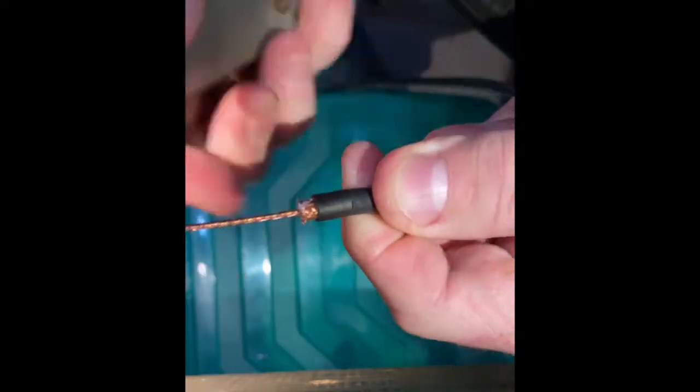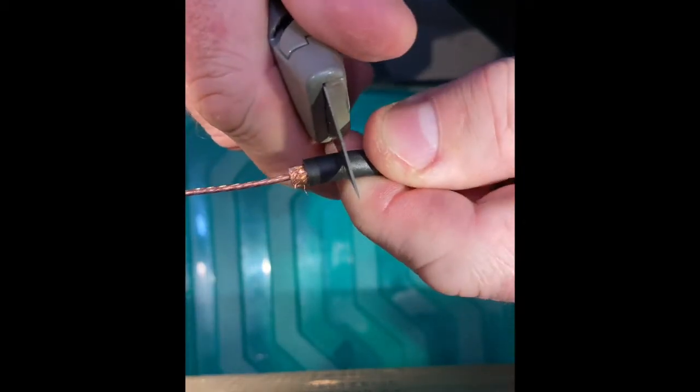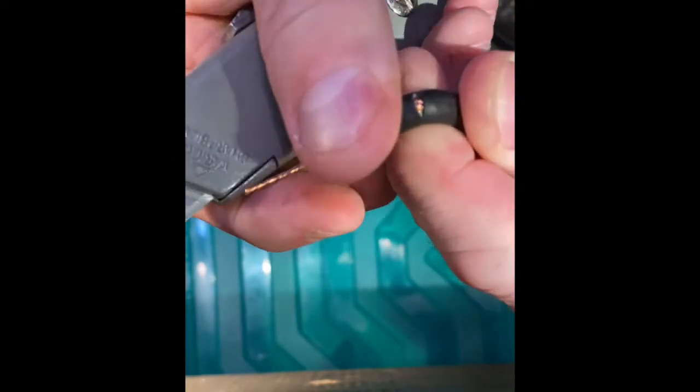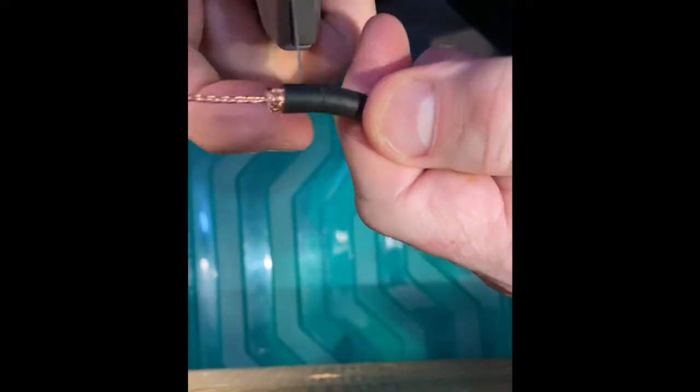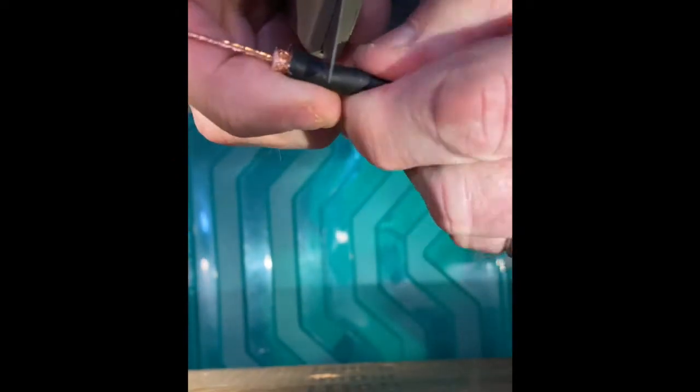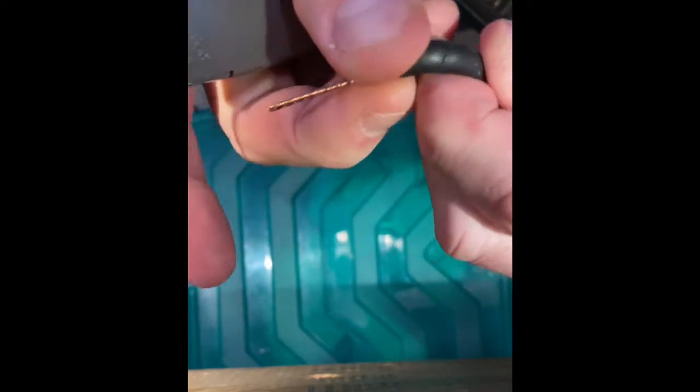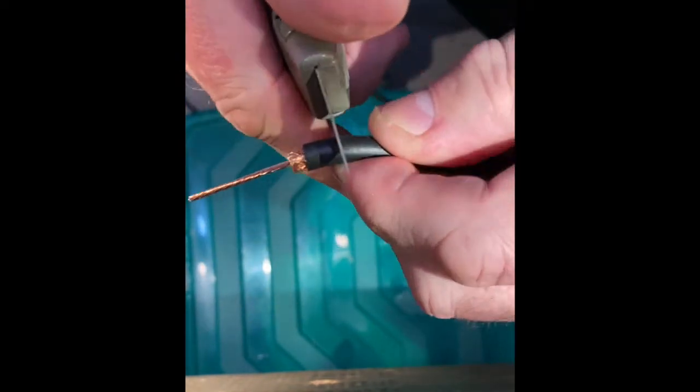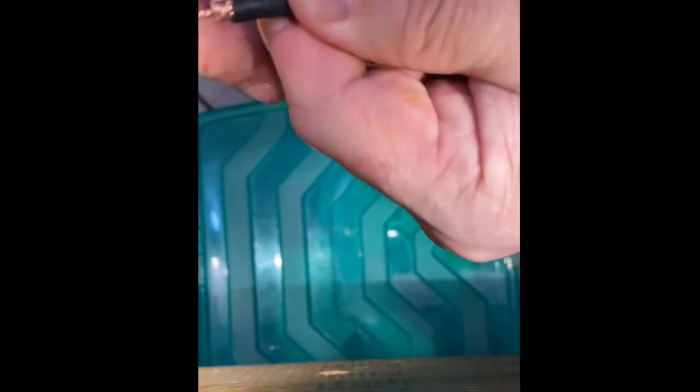And we're going to split the jacket, and if you stretch it like that, you can see the braid inside. And that's what we want to do is expose the braid without nicking it at that spot. There you go. All the way around. Get it all the way around.